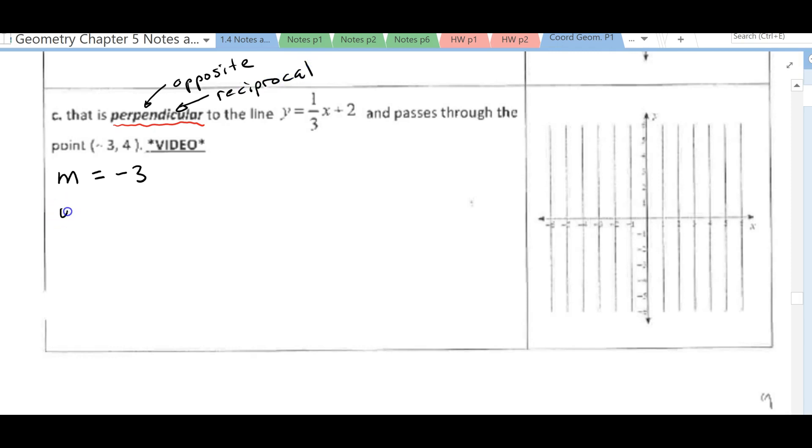All right, so then we've got y equals mx plus b. The value of x they give me is negative 3. The value of y they give me is 4. We figured out that our slope is negative 3. Let's go ahead and substitute everything in so we can solve for our b, our y-intercept.